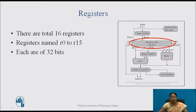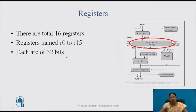This is the ARM core data flow model. In that I discussed about the register file. There are a total of 16 registers, which we have already discussed, and these registers are named from R0 to R15. Each register is 32 bits wide.